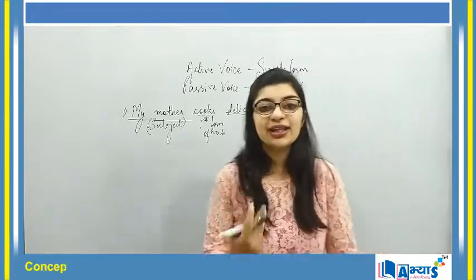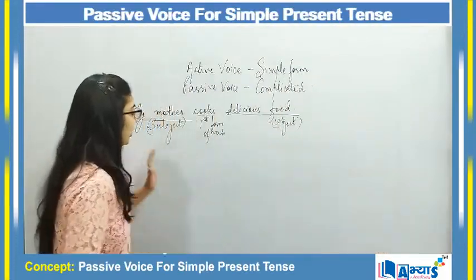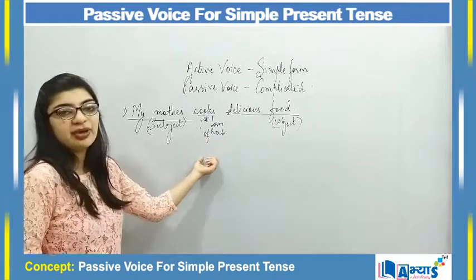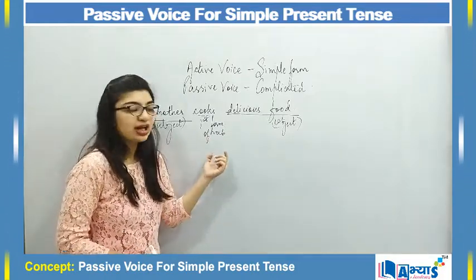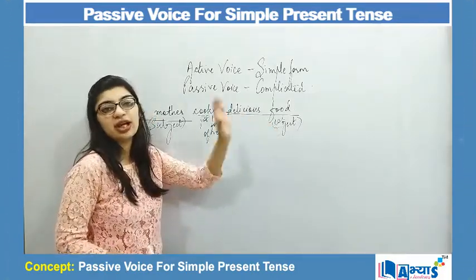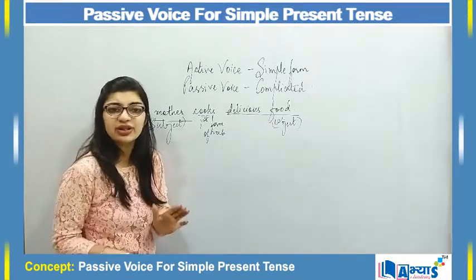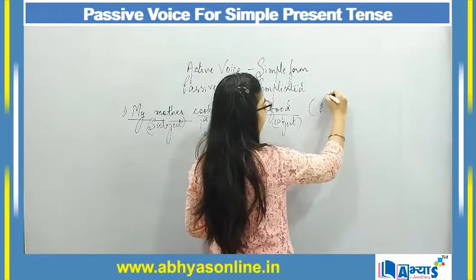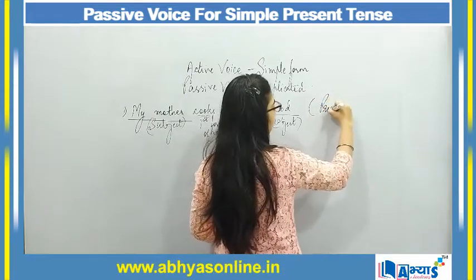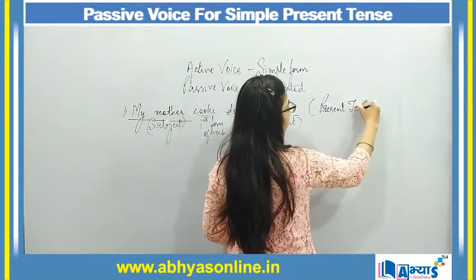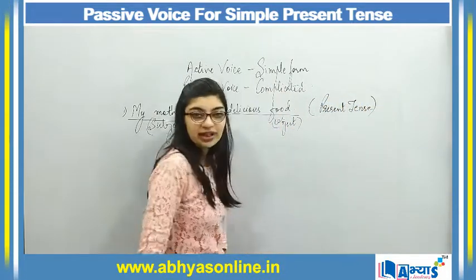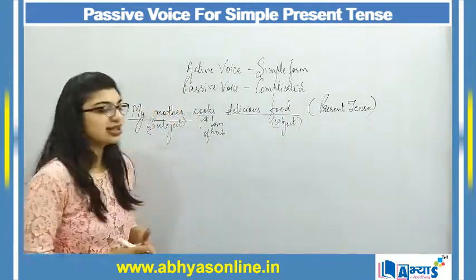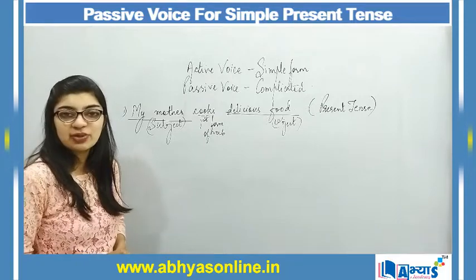Now, we have to know that this sentence has the verb in its first form, so it is a present tense sentence. It is very important to identify this first — that my sentence is in the present tense. After that, you will see whether the sentence is in active voice or passive voice.